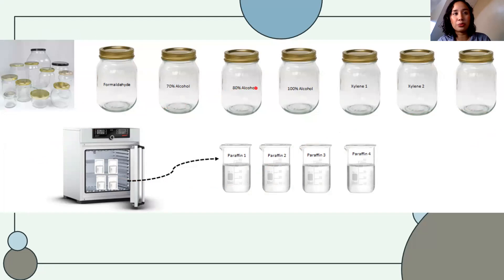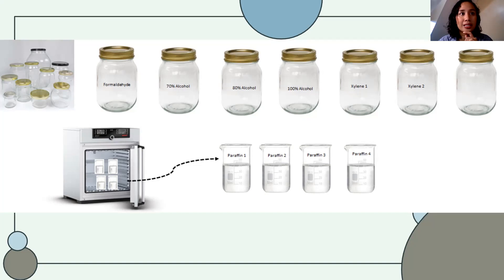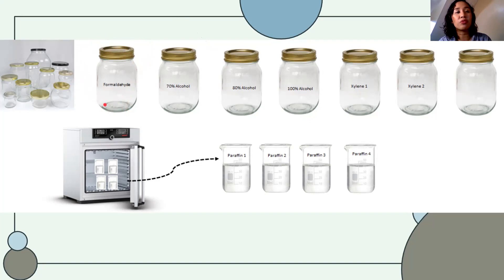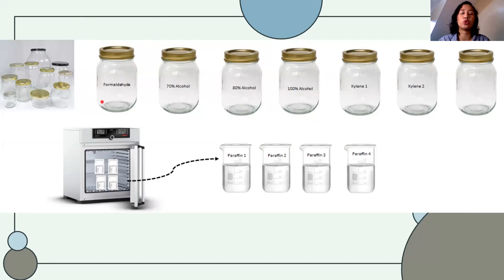In our school, what we use when we process tissue are jars. We basically submerge — after grossing, after the tissues were sliced into small pieces, they will be placed in a tissue cassette. In fixation, the first step is 10% formaldehyde. You soak your cassettes for about two to six hours depending on the size.